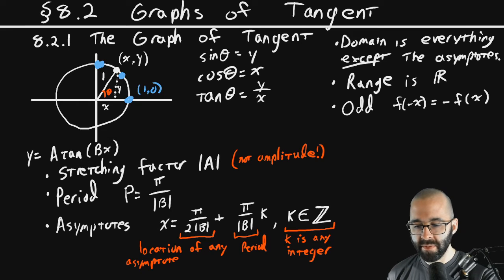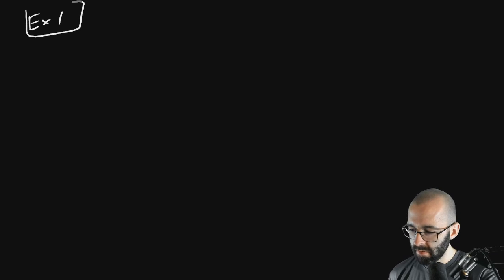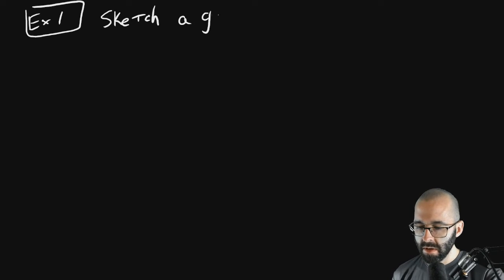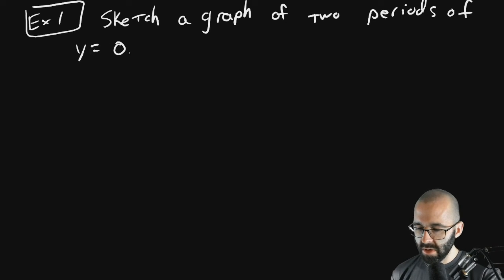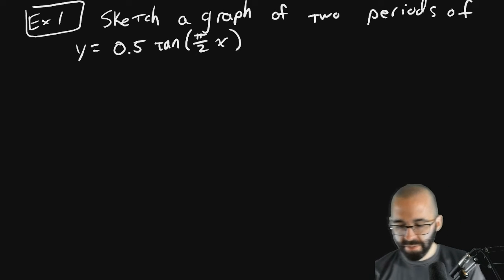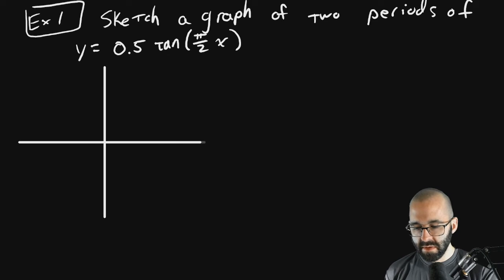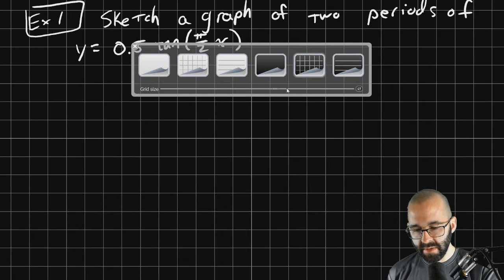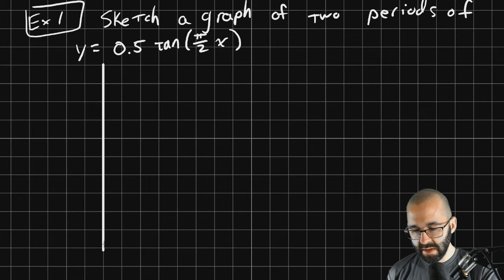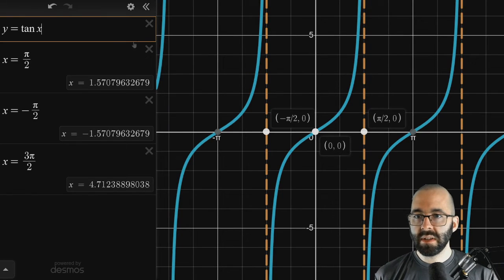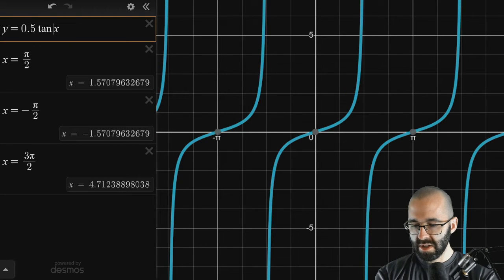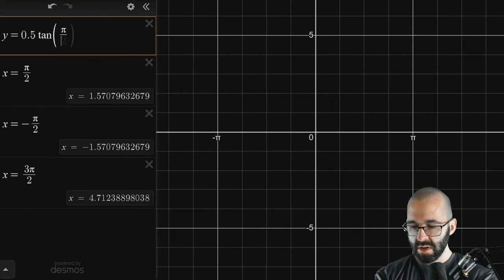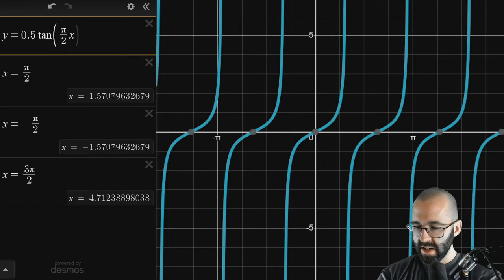Let's do an example: sketch a graph of two periods of y equals 0.5 times the tangent of (pi over 2)x. We'll graph it in Desmos and then copy it. In Desmos, type 0.5 times the tangent of pi divided by 2, press tab to exit the fraction, then type x.